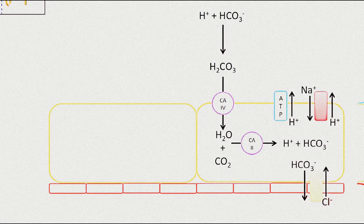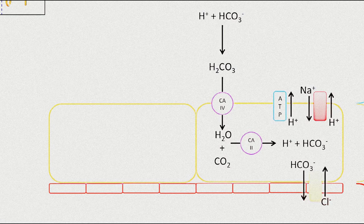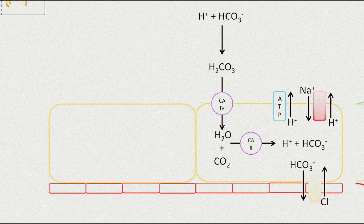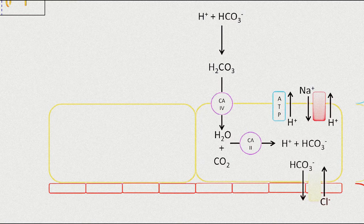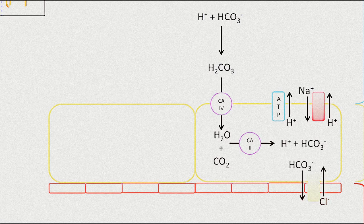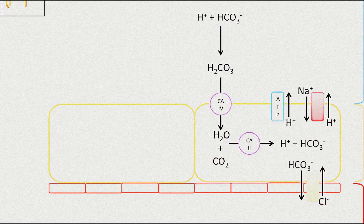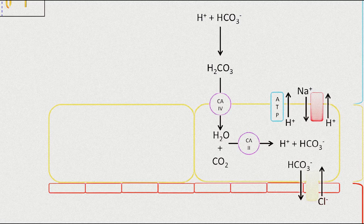The bicarbonate is then exchanged with chloride from the circulation and the bicarbonate is reabsorbed into the circulation. The protons are either actively secreted by a proton ATPase or exchanged for sodium from the filtrate. The protons are then excreted in the urine and the bicarbonate is reabsorbed into the blood.